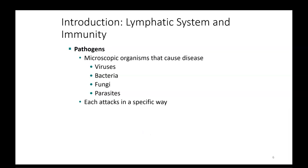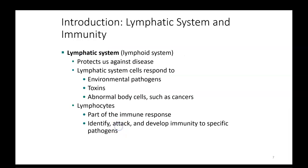In this introduction to the lymphatic system and immunity, we're going to first talk about pathogens. Pathogens are microscopic organisms that cause disease — this could be anything from viruses, bacteria, fungi, and parasites. Each one of these is going to attack its host in a specific way. With the lymphatic system — sometimes referred to as the lymphoid system — its main job is to protect us against disease. The job of the lymphatic system is to help protect us and respond to environmental pathogens, toxins we may come across, and abnormal body cells such as cancerous cells. It's going to do this with a specific type of cell referred to as a lymphocyte.